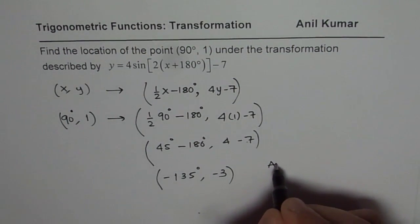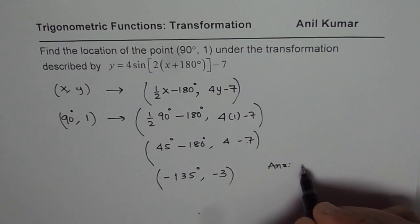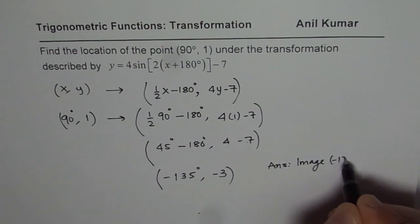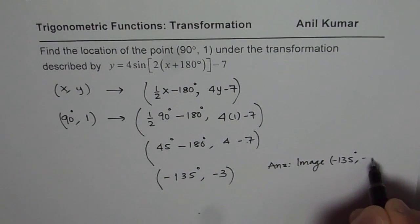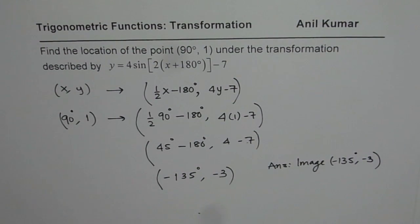So we can now write down our answer that the coordinate points of the image will be minus 135 degrees, y value of minus 3. That is how it can be answered. I hope that helps. Thank you.